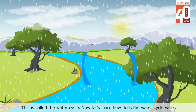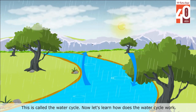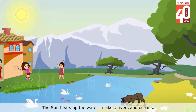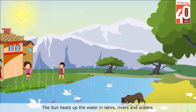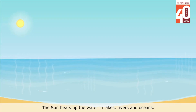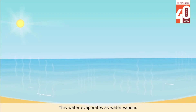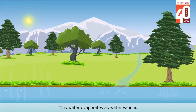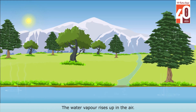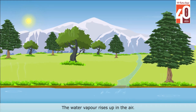Now let us learn how the water cycle works. The sun heats up the water in lakes, rivers and oceans. This water evaporates as water vapour. Plants also give out water vapour from their leaves.